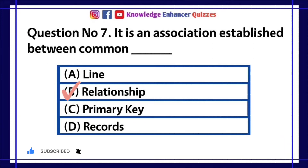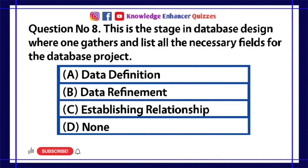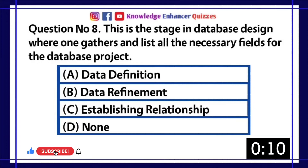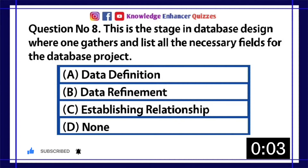Question number eight: This is the stage in database design where one gathers and lists all the necessary fields for the database project. A) Data definition, B) Data refinement, C) Establishing relationship, D) None. Option A is the right answer.